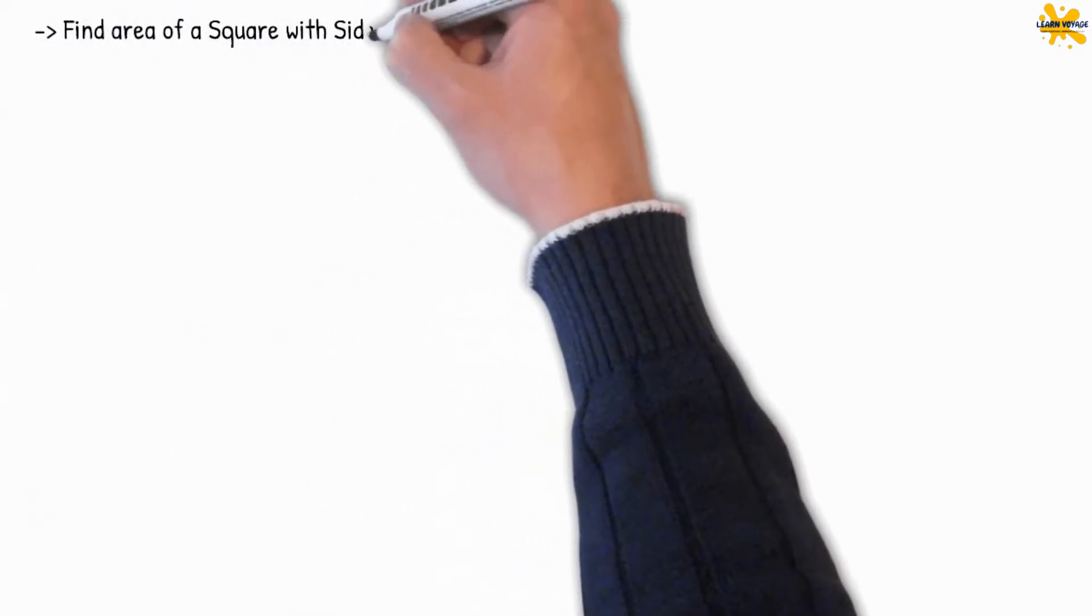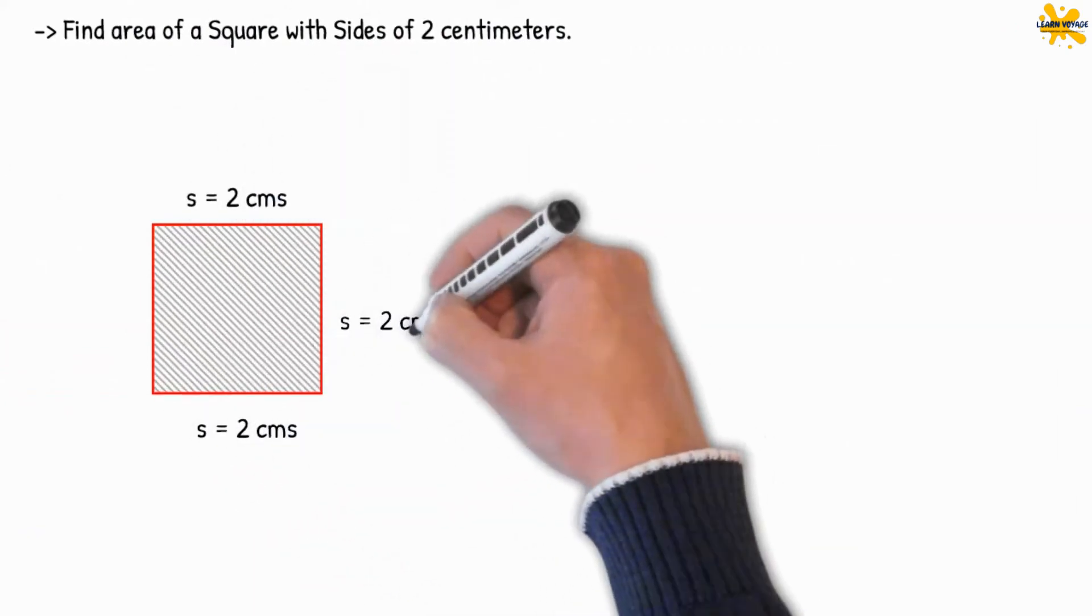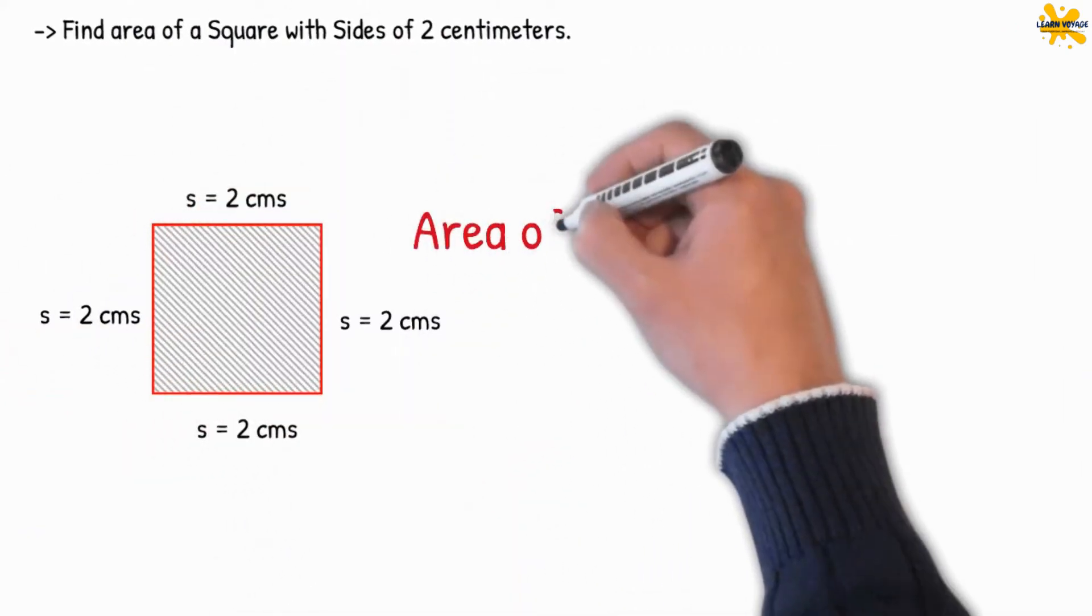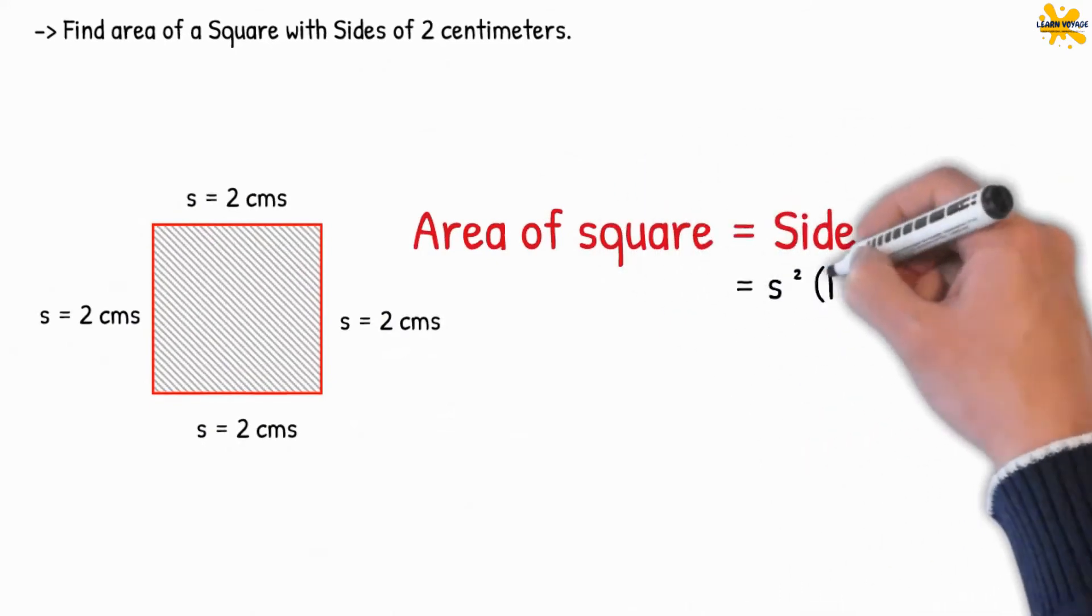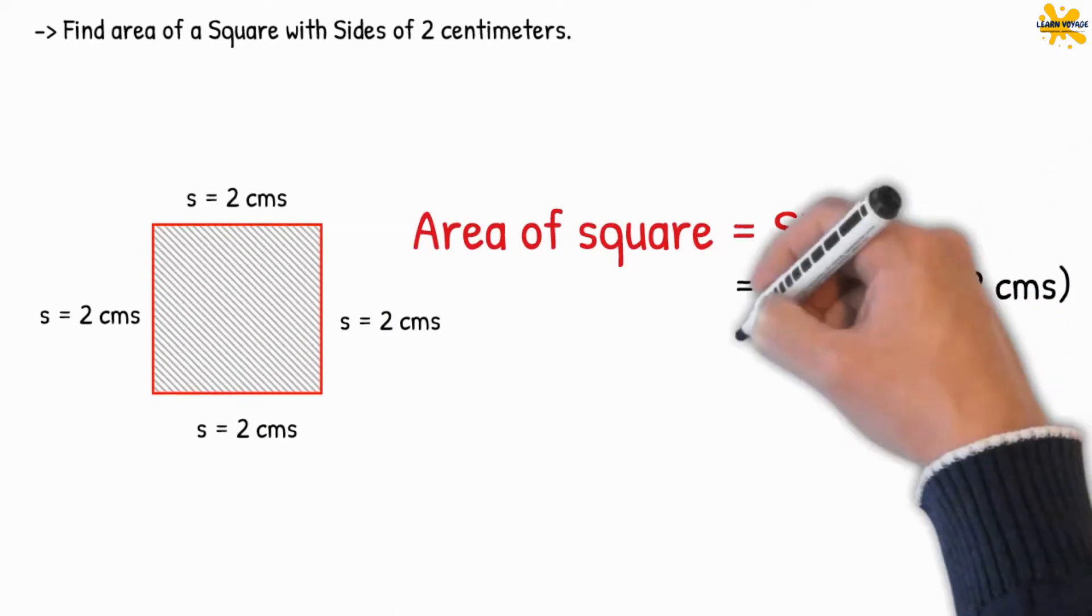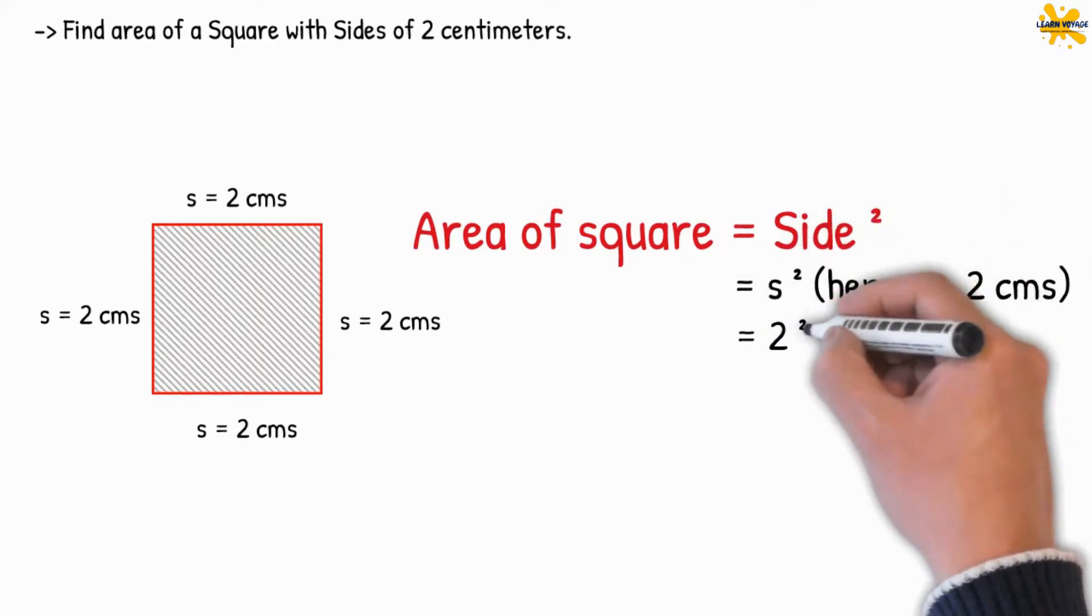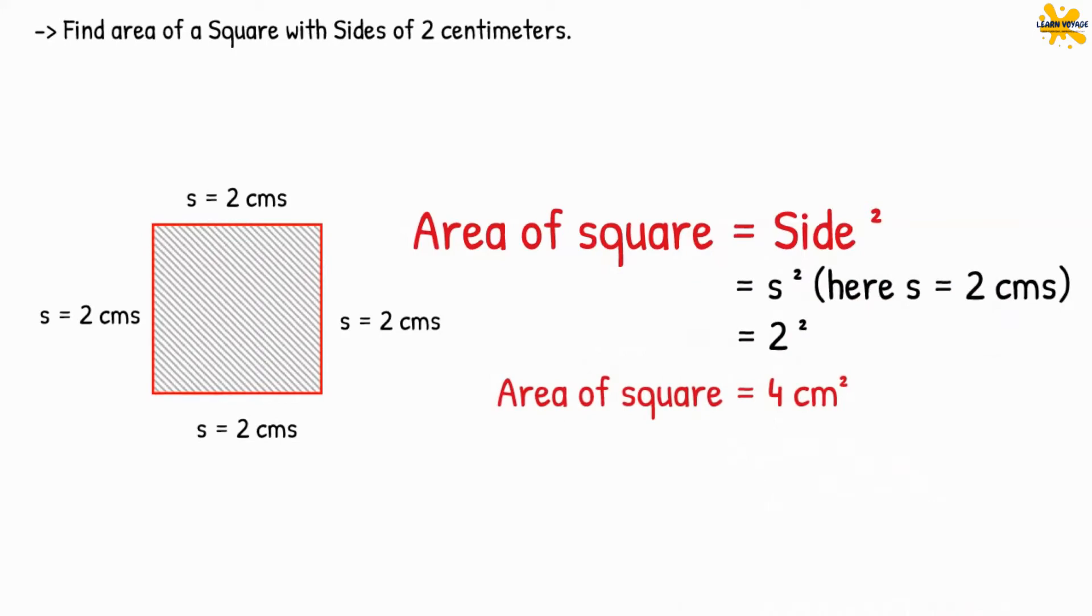Let me show you an example. To find the area of a square with its side equal to 2 cm. As you know, the area of the square is equal to the side squared. Here the side S is 2 cm. Therefore, the area A will be 2 to the power of 2, which equals 4 square cm. Isn't it simple?